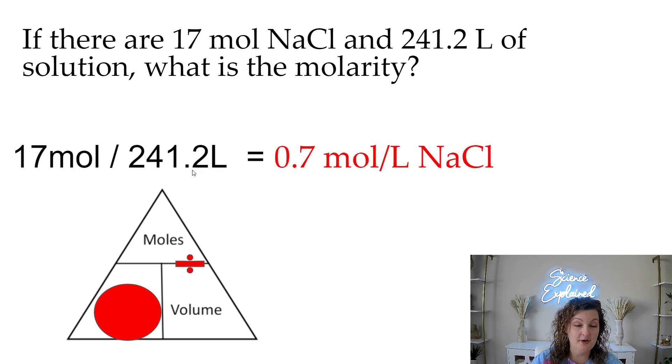So our math right here is going to be our moles, 17, divided by our volume. Our volume is already in liters, which is perfect for us. So you can just go ahead and write it in. When you type this in your calculator, the top number goes first, and then you hit divide by the bottom number, and you end up getting 0.7 moles per liter of NaCl.